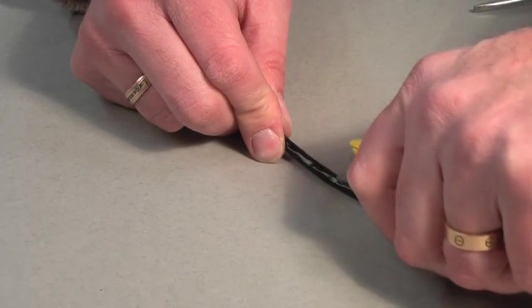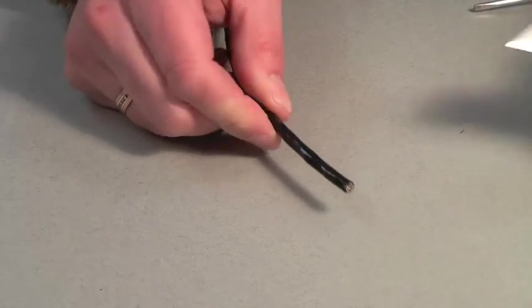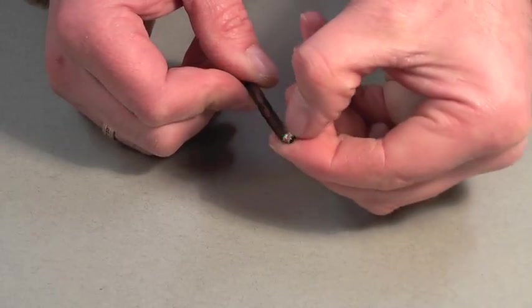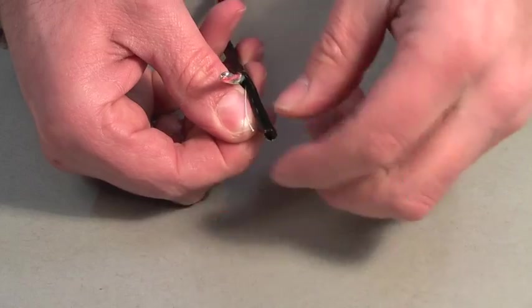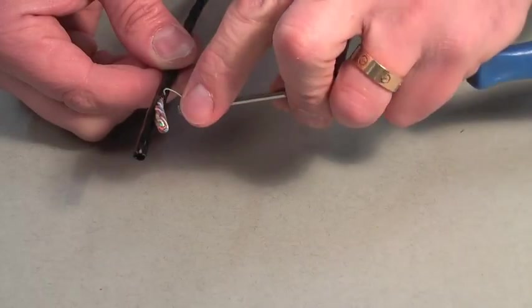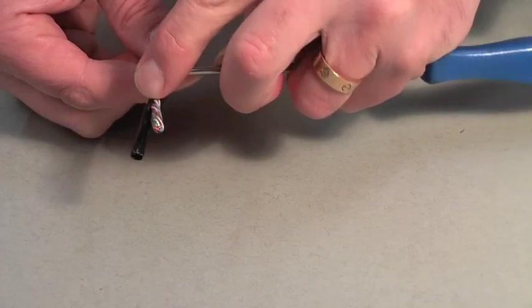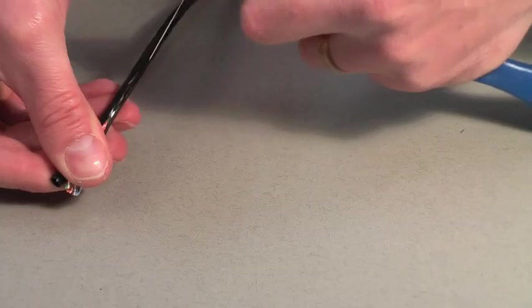To prepare the Cat5 cable, first of all we need to find the ripcord contained within the cable. So slice along the length of the outer sheath and retrieve the ripcord. Grab a hold of the ripcord and pull it back along the cable length.